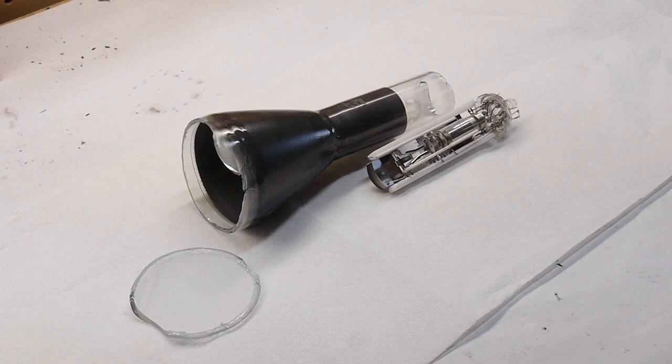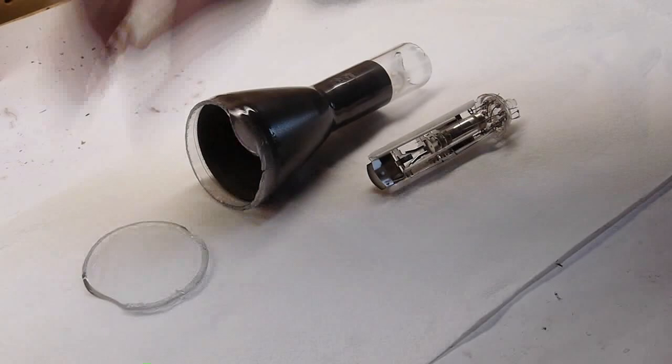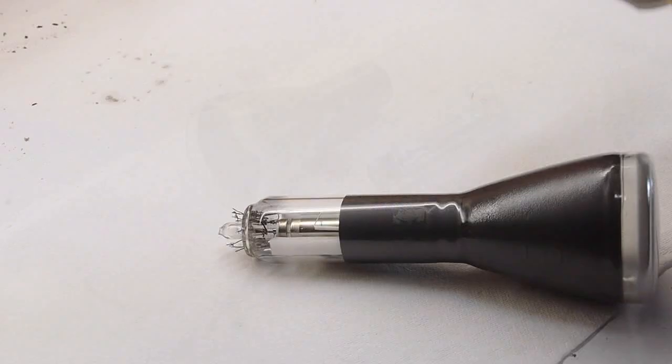Hey guys, today I'm taking apart an electrostatic cathode ray tube. This is what you would find in an old-fashioned oscilloscope. So it was actually a very small oscilloscope. The whole screen diameter is only about 3 inches.